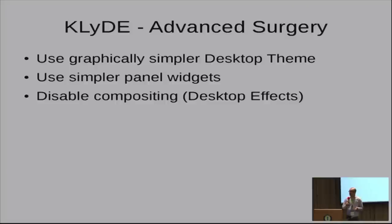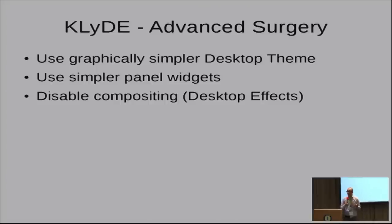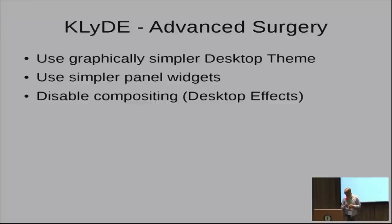If you want to really save memory, you start cutting things that make an obvious difference. You could use a simpler desktop theme — the theme provides pretty transparent gradients and shadows, but a simpler theme renders simpler data in the X server and saves memory. You can use simpler panel widgets, a simple pop-out menu instead of a complex menu, and turn off compositing in the window manager, which is called desktop effects in KDE.